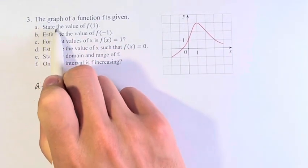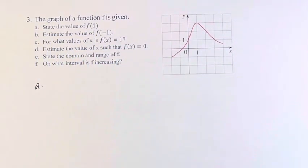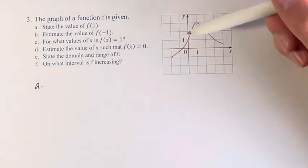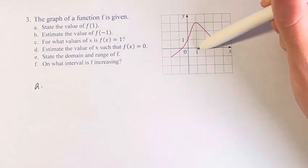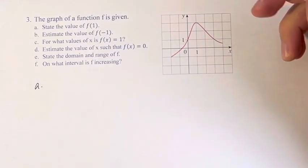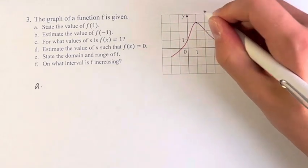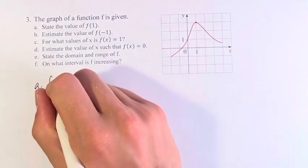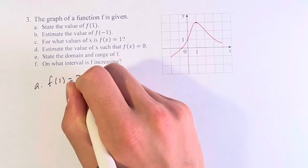First, we're asked to state the value of f(1). It's the value of the function f when x equals 1. The x-axis 1 is right here. We go up until we see the function at this point, which has a value of 1, 2, 3 on the y-axis. So f(1) equals 3.